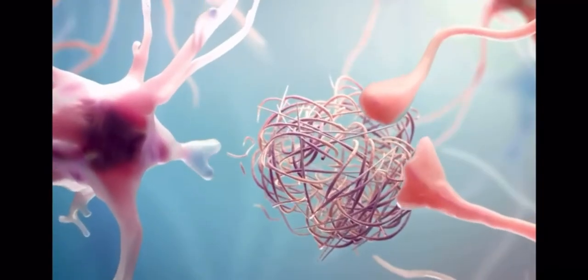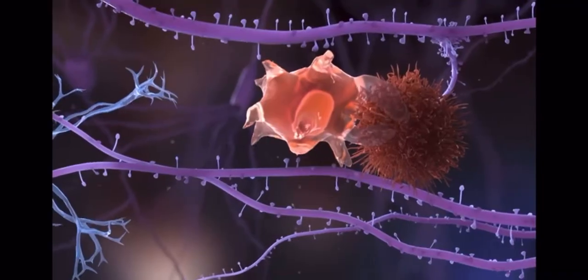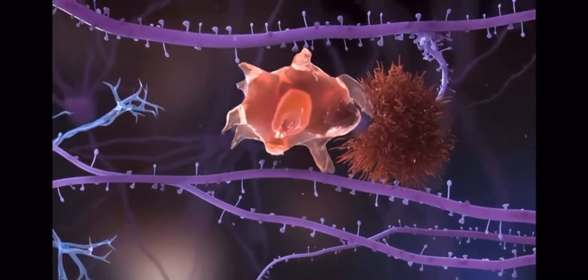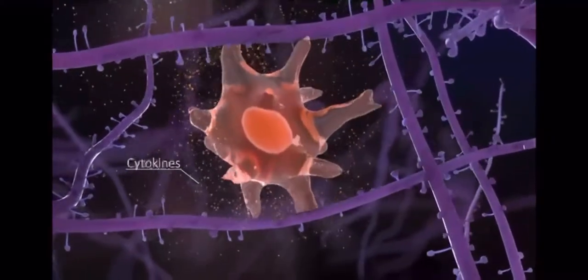Amyloid beta activates microglia as it is taken up. This, in turn, makes microglia release inflammatory cytokines that can damage the neurons and block synapses throughout the brain.